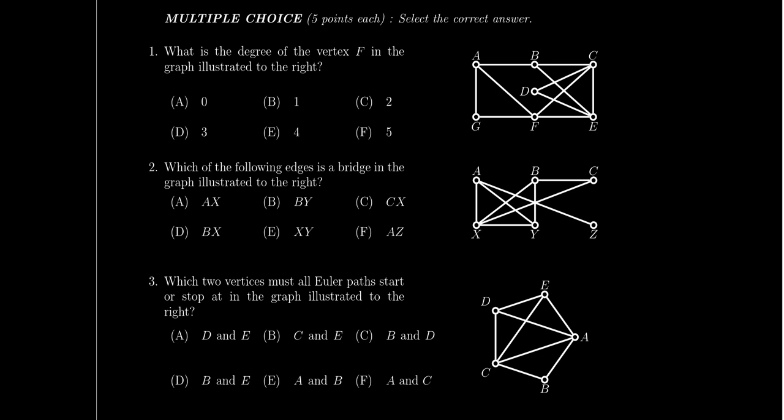This exam covers lessons one through eight about graph theory. Lesson nine, where we start talking about scheduling and digraphs (directed graphs), will not appear on this exam — it only covers undirected graphs from lessons one through eight. So we'll see things like Euler circuits, Hamilton circuits, traveling salesman problems, shortest path, Dijkstra's algorithm, Fleury's algorithm, and Kruskal's algorithm. Question one is very basic, like a lesson one concept — very low level stuff.